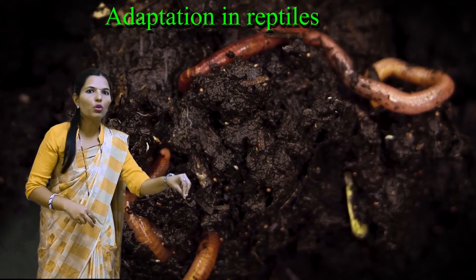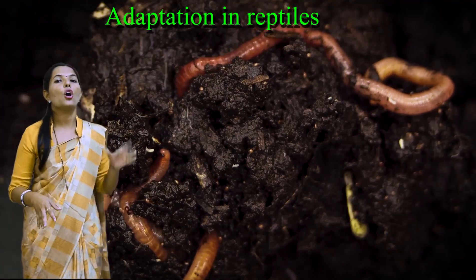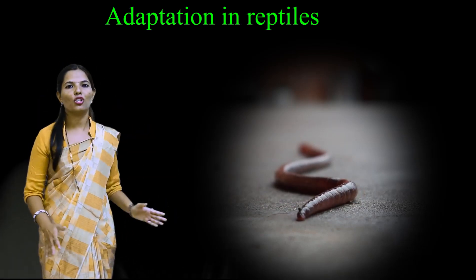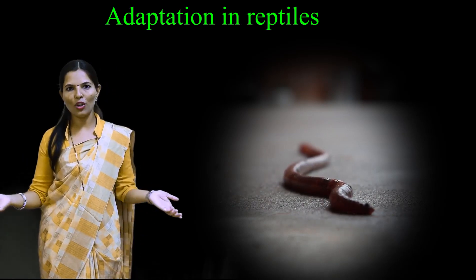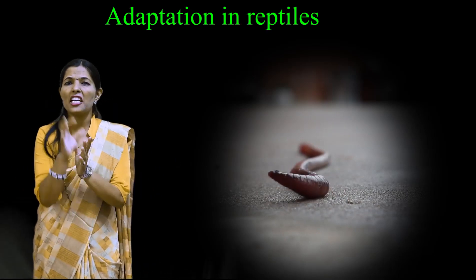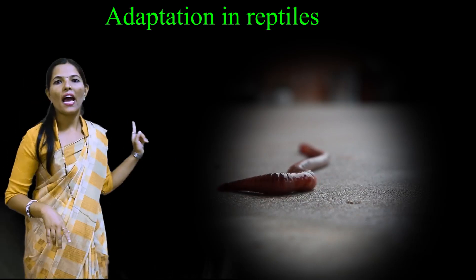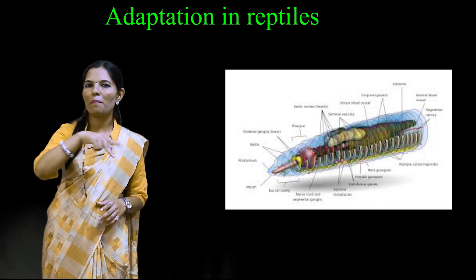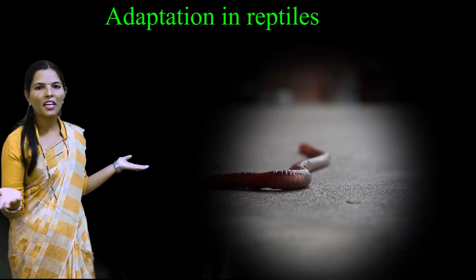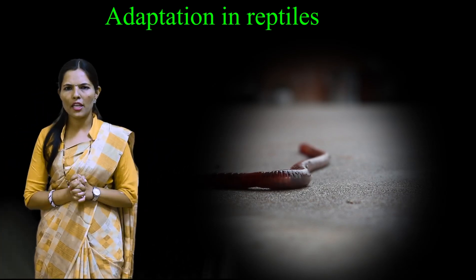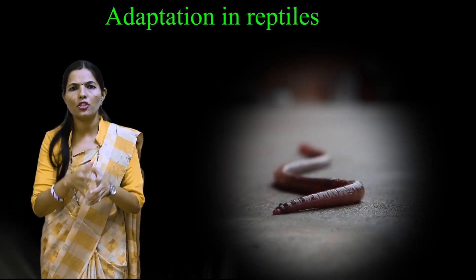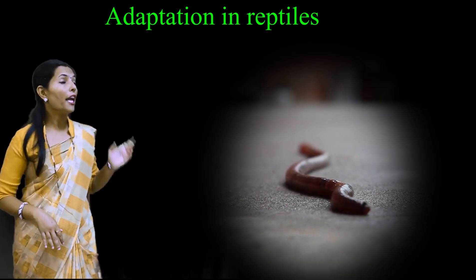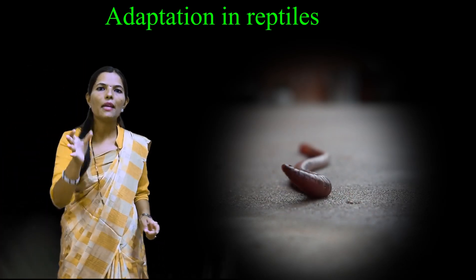The earthworm's creeping movement involves continuous contraction and relaxation of its muscles. This continuous process is going on in the muscles — this is how the earthworm does its creeping and crawling movement. The earthworm covers 25 to 30 cm distance in one minute. This is interesting information about the earthworm.